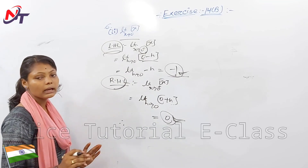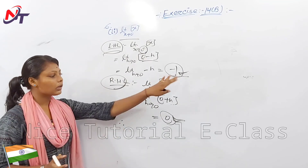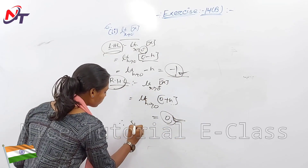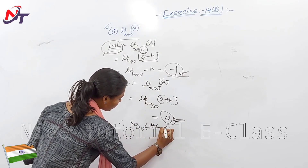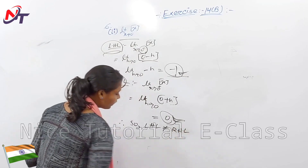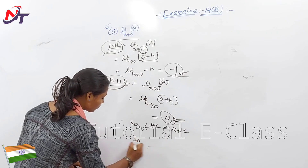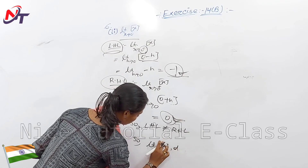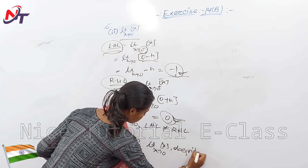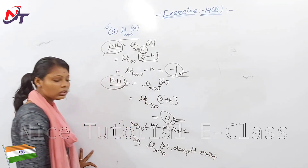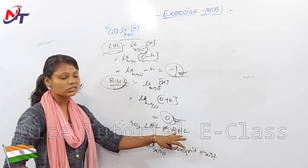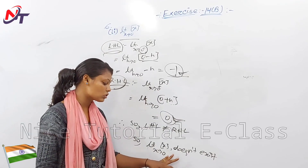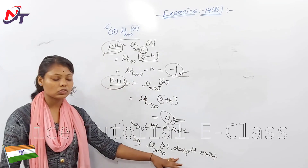Left-hand limit is minus 1, right-hand limit is 0. Left-hand limit is not equal to right-hand limit. So the limit x tends to 0 of bracket x does not exist.